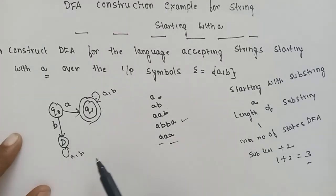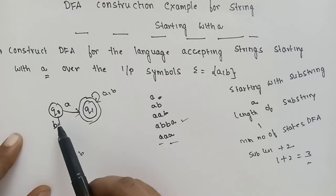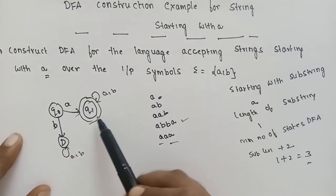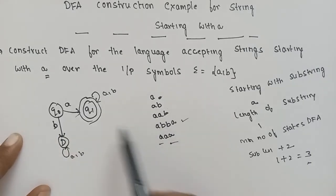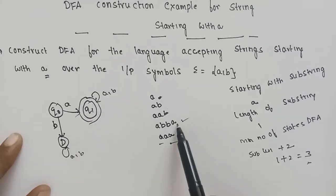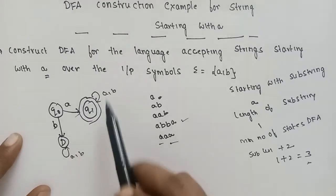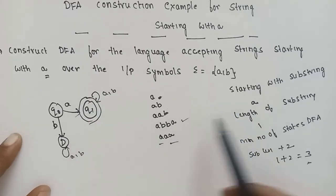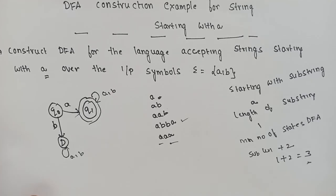For example, for the string ABB: from Q0 on A we go to Q1, then on B we stay at Q1, then on B we stay at Q1. The string ends in the final state, so it is accepted.